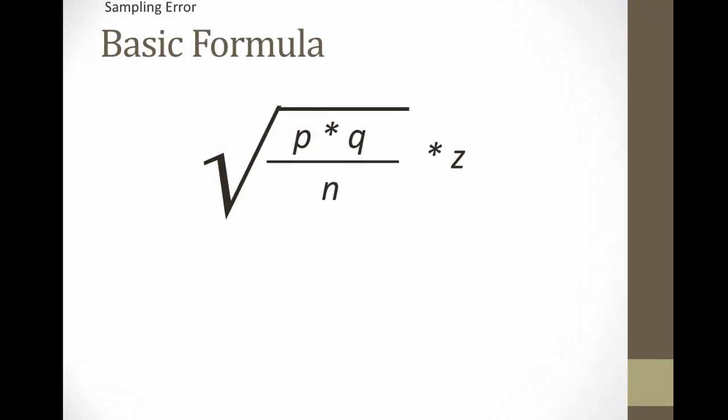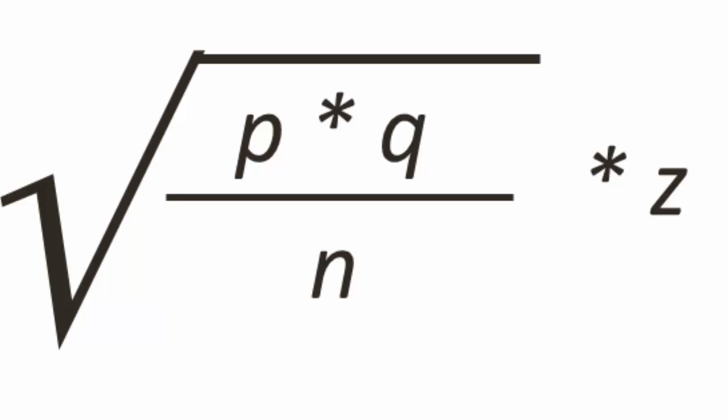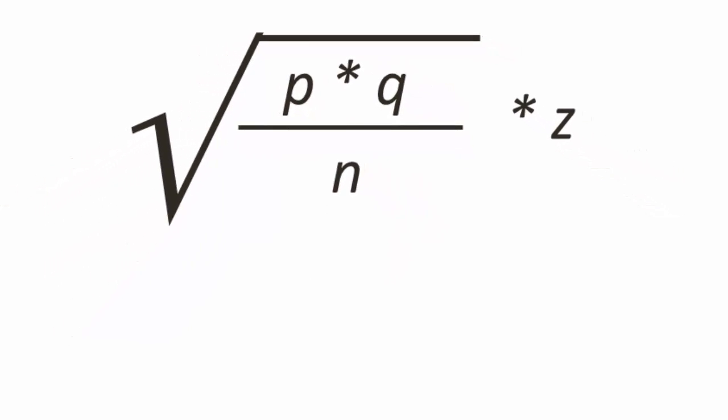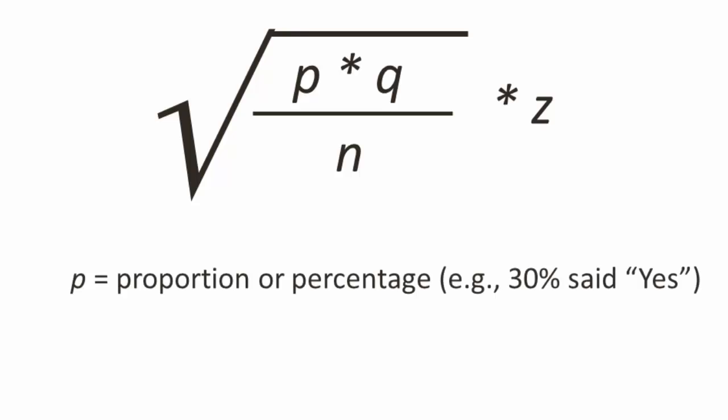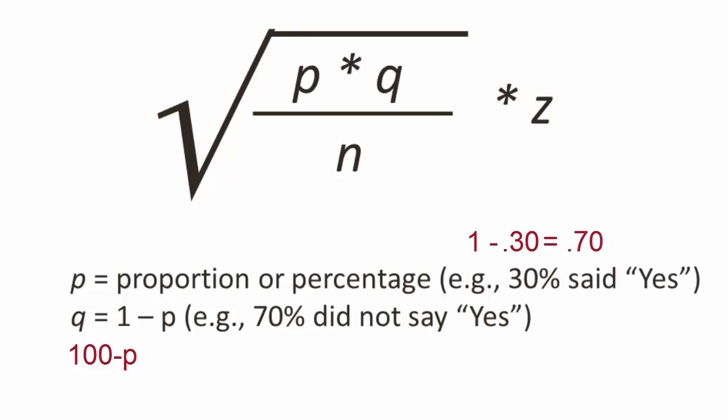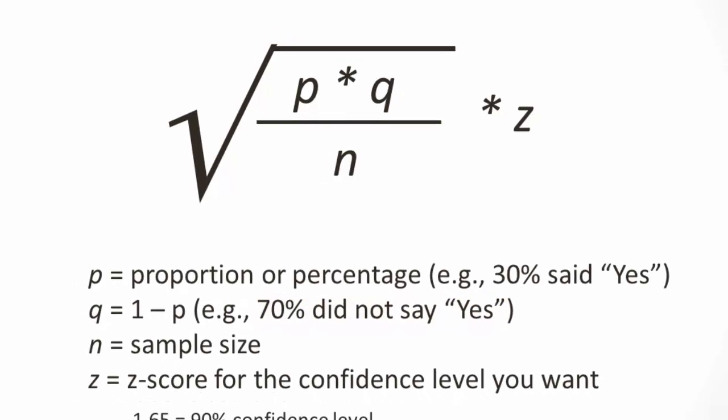Now let's learn how to calculate sampling error. The basic formula is the square root of P times Q divided by N multiplied by the Z-score. Remember that P is the proportion, or the percentage, who gave a particular answer, such as 30% said yes to a question, or when displayed as a proportion, 0.30. Then Q is 1 minus P, or 100 minus P if P happens to be a percentage. So this could be 1 minus 0.3, or 0.7, meaning that 70% did not answer yes to the question. Now note that this doesn't say that 70% said no, because it could easily be a combination of no and undecided answers. It just means that 70% did not answer yes. Little n is the sample size, and Z is the Z-score for the confidence level you want.